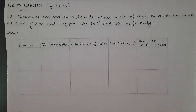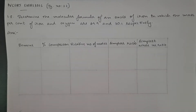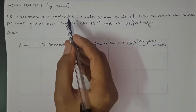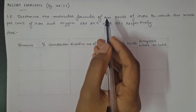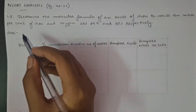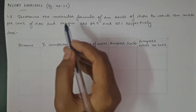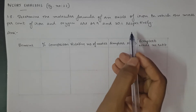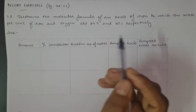Hey guys, welcome back to my YouTube channel. Today we are going to solve the eighth question of NCERT Chemistry, page number 22. The question is: determine the molecular formula of an oxide of iron in which the mass percent of iron and oxygen are 69.9 and 30.1 respectively.